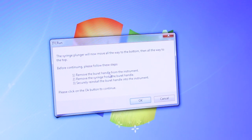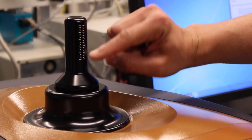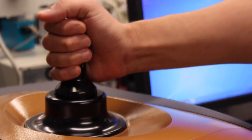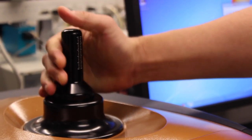Step one, remove the burette handle from the instrument. That refers to this part right here. This is the burette and this burette handle. To remove it, you need to push it down with some force and rotate it so that it unlocks and then you can pull out the burette handle.